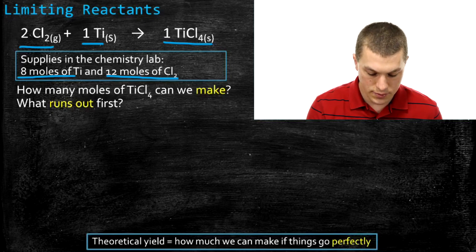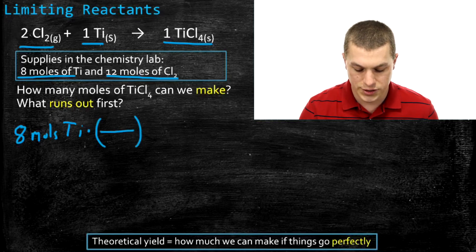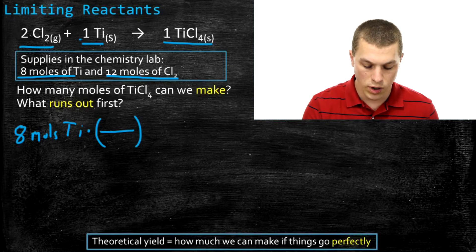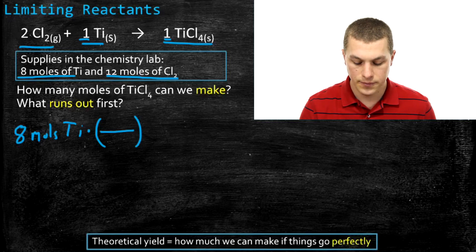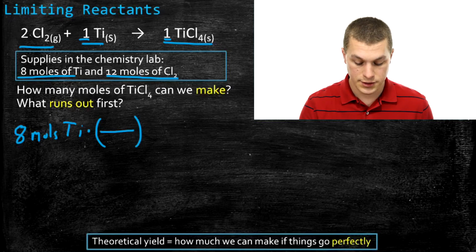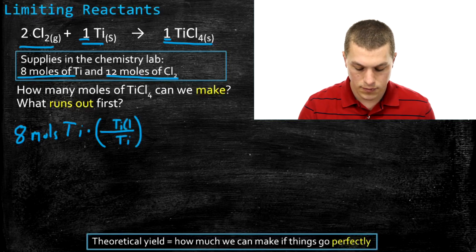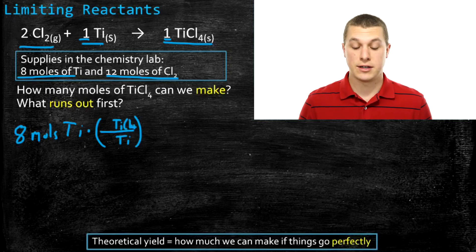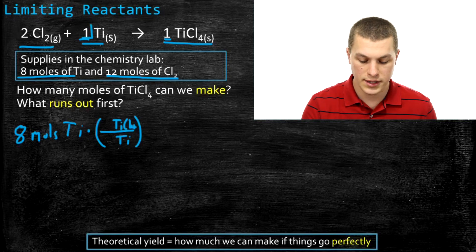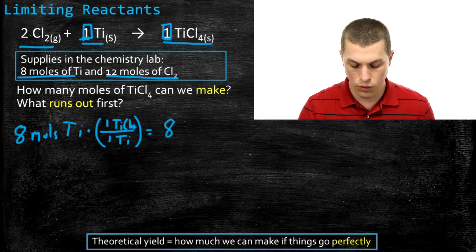We'll start with titanium, using a conversion factor as in the stoichiometry video. I have 8 moles of titanium, and the recipe tells me I need 1 mole of titanium per mole of titanium chloride. Setting up the conversion factor with 1 titanium in the denominator and 1 titanium chloride in the numerator, I find I can make 8 moles of titanium chloride with my titanium.